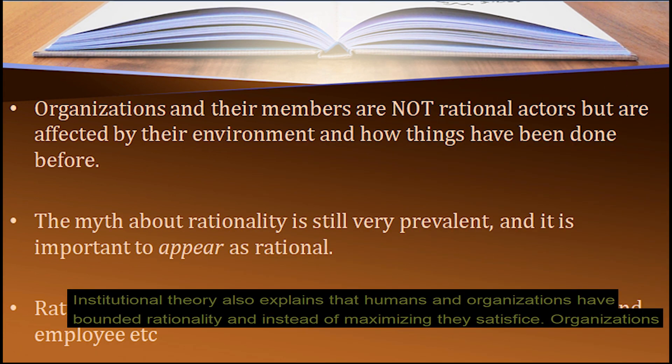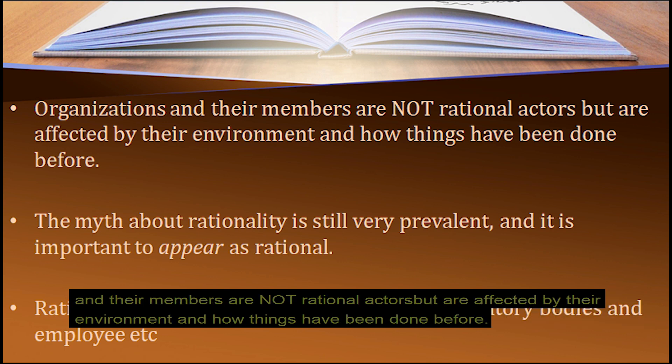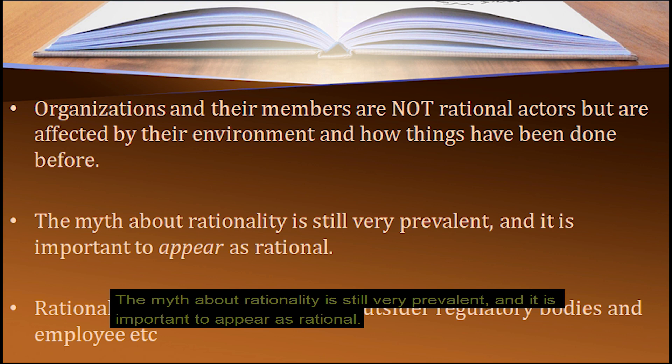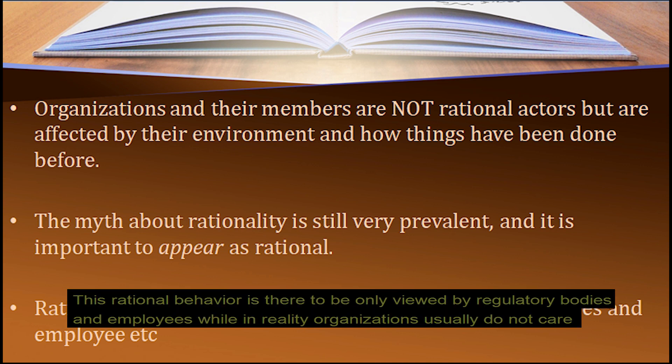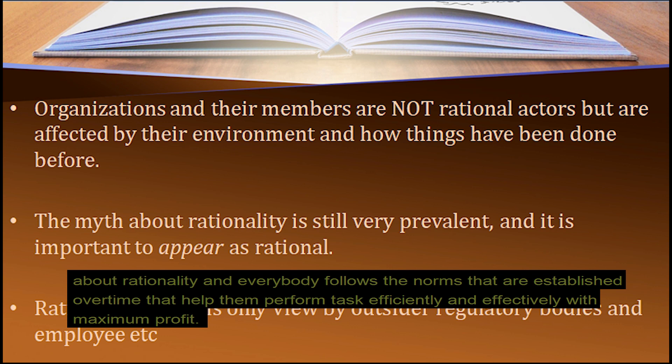Institutional theory also explains that humans and organizations have bounded rationality and instead of maximizing, they satisfice. Organizations and their members are not rational actors but are affected by their environment and how things have been done before. The myth of rationality is still very prevalent and it is important to appear rational — this rational behavior is displayed for regulatory bodies and employees, while in reality organizations usually follow norms established over time that help them perform tasks efficiently and effectively with maximum profit.